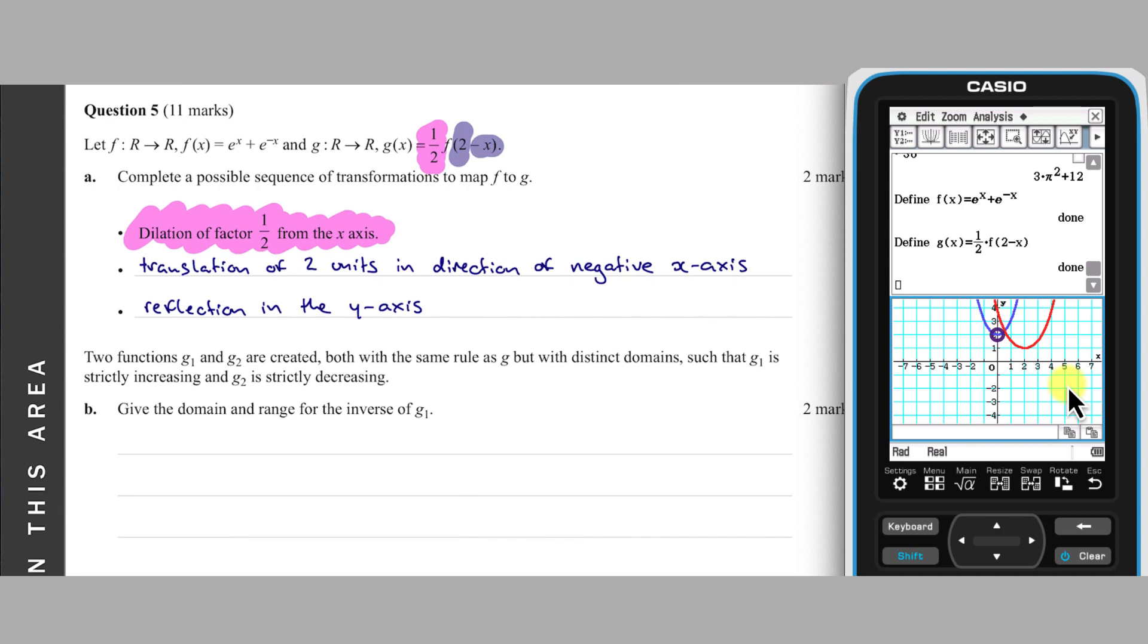Which starts at 0,2, then is dilated down by factor a half to 0,1, then translated left two units to minus 2,1, then reflected to 2,1.